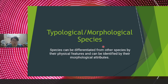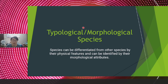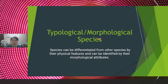Next is the morphological or typological species concept. You can consider this as extra information. According to this concept, species can be differentiated from other species by their physical appearance and identified by their morphological attributes. Organisms with the same physical appearance are considered the same species. This was the earliest concept scientists used to define species, but today many scientists do not fully agree with this definition.